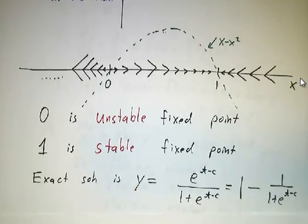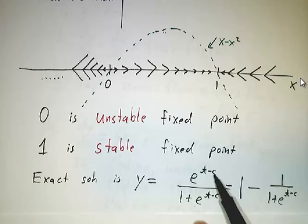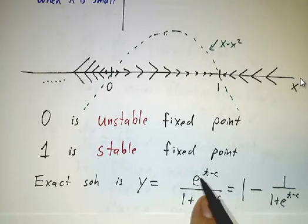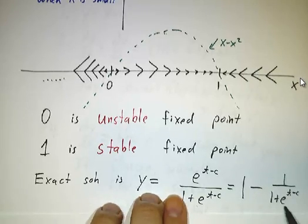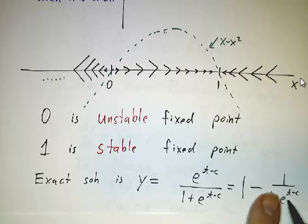And by the way, you can solve the equation exactly. The exact solution goes as a constant times e^t over 1 plus that constant e^t. When e^(t-c) is very, very small, this is approximately an exponential. When e^(t-c) is very big, you can rewrite it as 1 - 1 over this, in which case it goes as e^(-t).